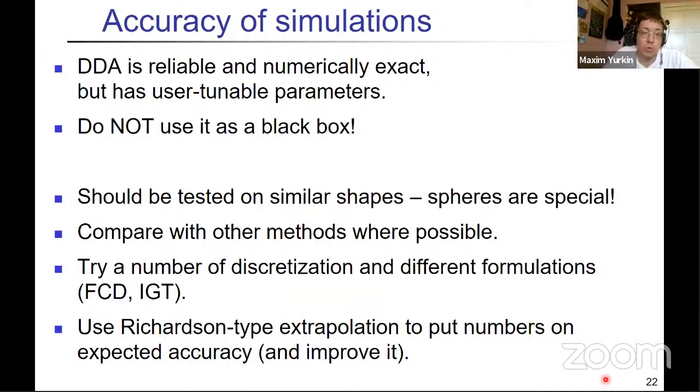A few words about the accuracy of simulation. So, overall, the DDA is a reliable numerically exact method. You can use it as a black box and the codes kind of allow it. So, you just download the code, run it and get some results. But I encourage you not to do it. At least do some testing, especially if you're doing not a single simulation, but like a series of simulations. And when you do this test to compare with some reference method, also consider that spheres are usually special. So, if you do some test on spheres and then apply the code to some other shape, even spheroids or especially some inhomogeneous irregular particles, then the conclusions about the accuracy are not necessarily transferable. So, it's nice to have at least a few tests on comparable shapes. And actually, for that, you can even use the DDA itself. So, if you just vary discretization or try different formulations and see how the result changes, it will give you some feeling.